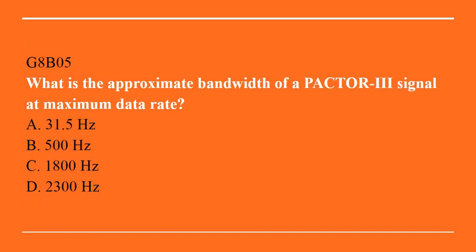G8B05: What is the approximate bandwidth of a Pactor III signal at maximum data rate? A. 31.5 Hz. B. 500 Hz. C. 1,800 Hz. D. 2,300 Hz. Answer is D. 2,300 Hz.